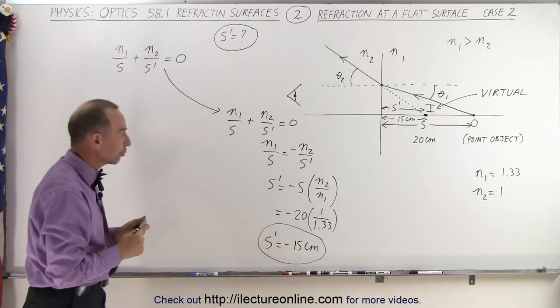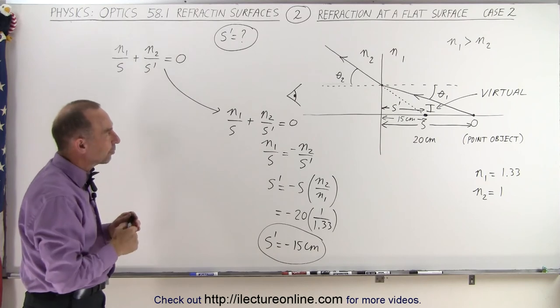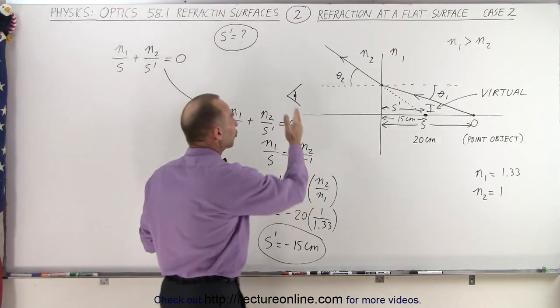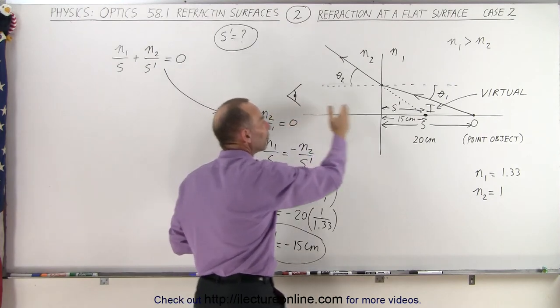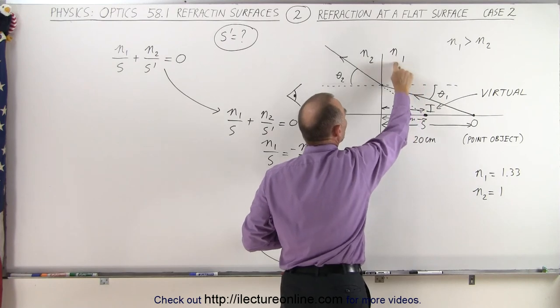So now you've seen a couple of examples with flat surfaces, with flat boundaries. Notice you tend to put the observer on the other side from the object. The object, the region where the object is at, typically is called N1.